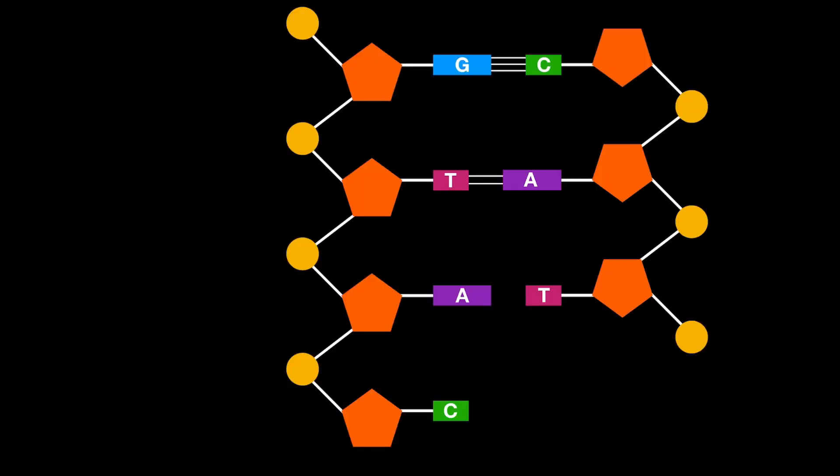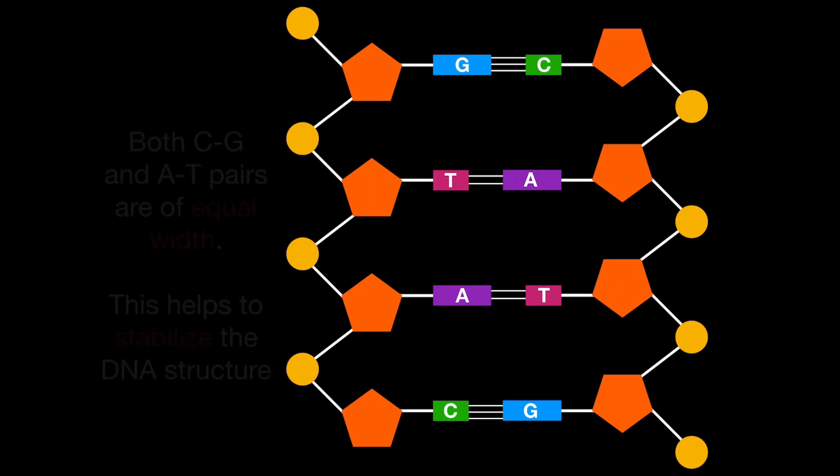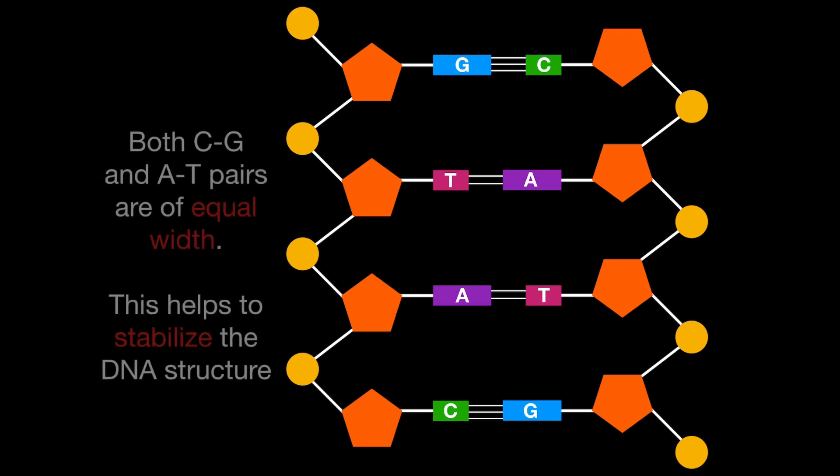This is significant because in complementary base pairing, you always have one purine pairing with one pyrimidine, so guanine with cytosine or adenine with thymine. And because you always get a purine with a pyrimidine, this means that the complementary pairs are of equal width. This equal width helps to stabilize the DNA structure as a whole.